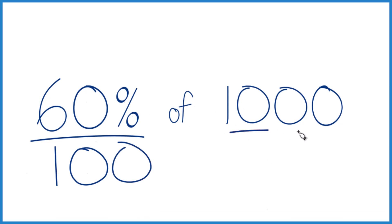So if I just had 100 here, that would be 60. But since I have 1,000, I need another zero. So instead of 60, it's 600.